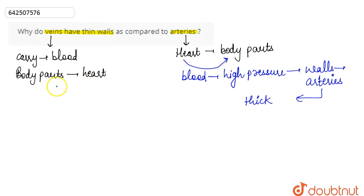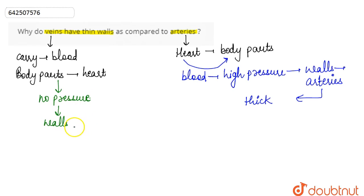In the case of veins, the blood has to be carried from body parts to the heart. Here, no such pressure is exerted on the walls of the veins. Because there is no such pressure exerted on the walls, the reason being, veins have thin walls compared to the arteries. That is the reason why veins have thin walls.